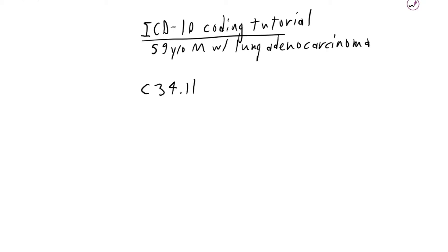We also need to specify the bronchus. If you pull out your Netter and compare it to this patient, this was the B1 bronchus. This was an adenocarcinoma, which the code for that was X7. And this tumor had the T790M mutation. So this is the base ICD-10 code.